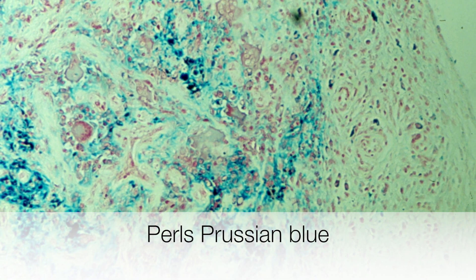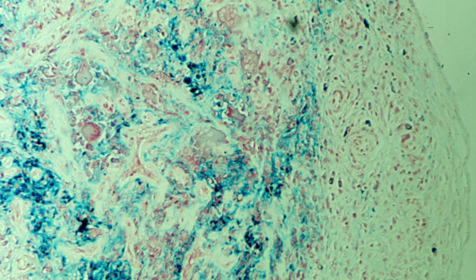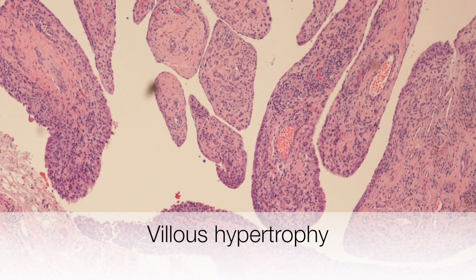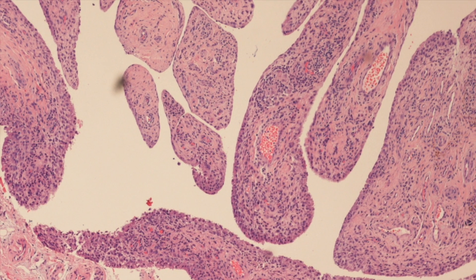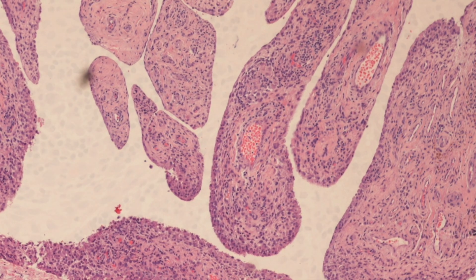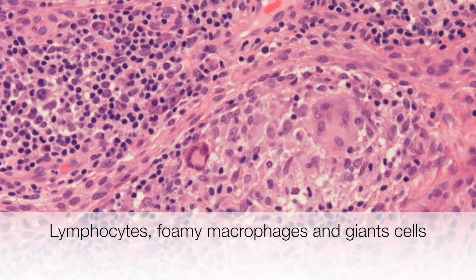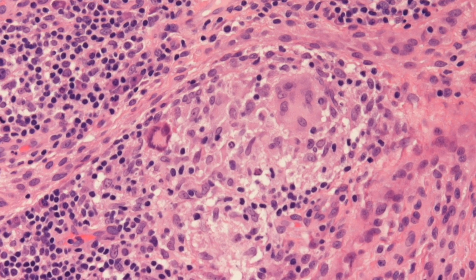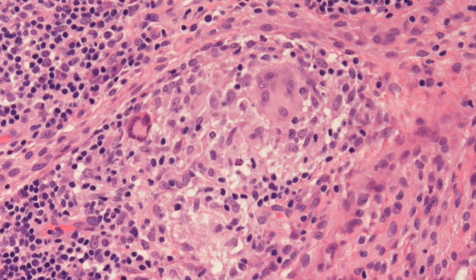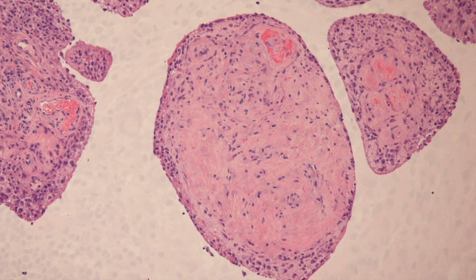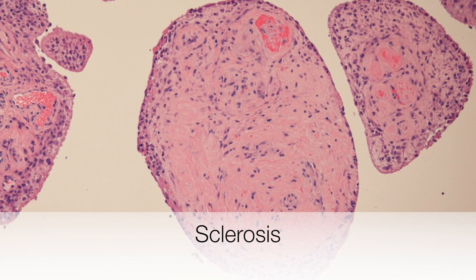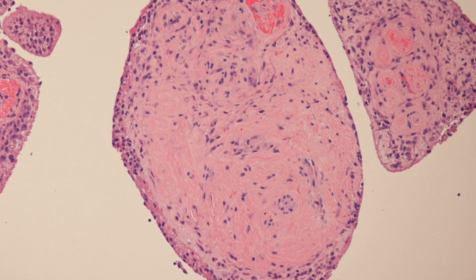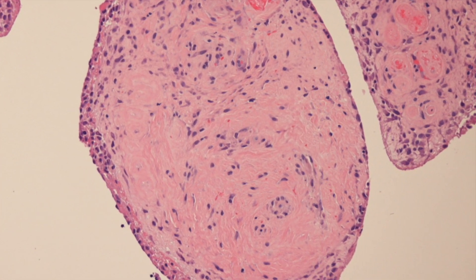Here the haemosiderin has been stained with Pearls Prussian blue. This is the histological appearance of the areas of villous hypertrophy. Here we see a collection of lymphocytes, foamy macrophages and multinucleate giant cells. And finally, here is an area of sclerosis.